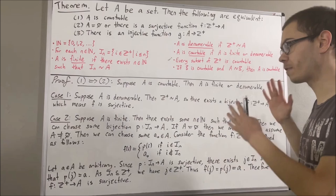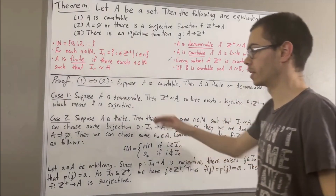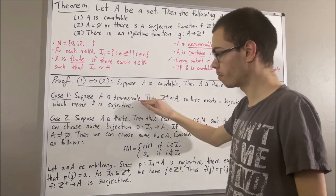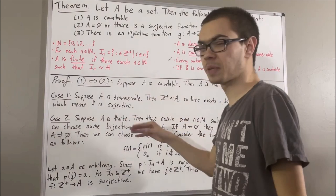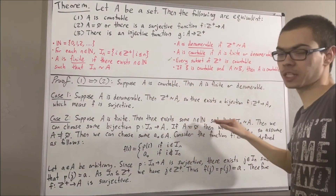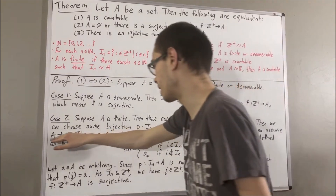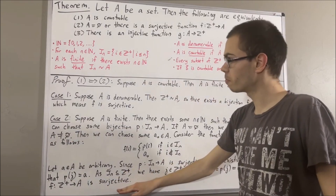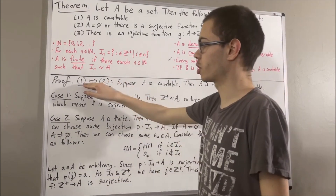At this point we have exhausted all possibilities. In the case where A is denumerable, we immediately had that 2 is true. In the case where A is finite, we split it into two cases: if A is equal to the empty set, we immediately had that 2 is true, and in the case where A is not the empty set, we have just shown that 2 is true. So we have shown if 1 is true, then 2 is true.